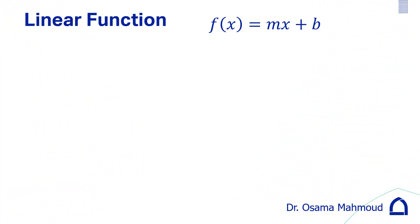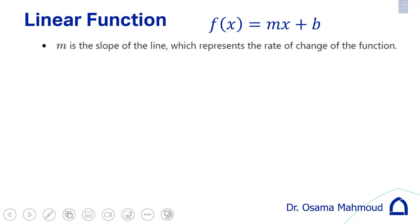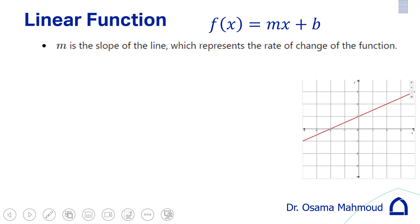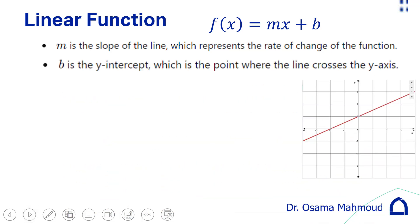The linear function represents a line: Y = MX + B, where M is the slope of the line and B is the y-intercept, which is the intersection point with the y-axis. To find the y-intercept in any function, you just put x equal to 0.